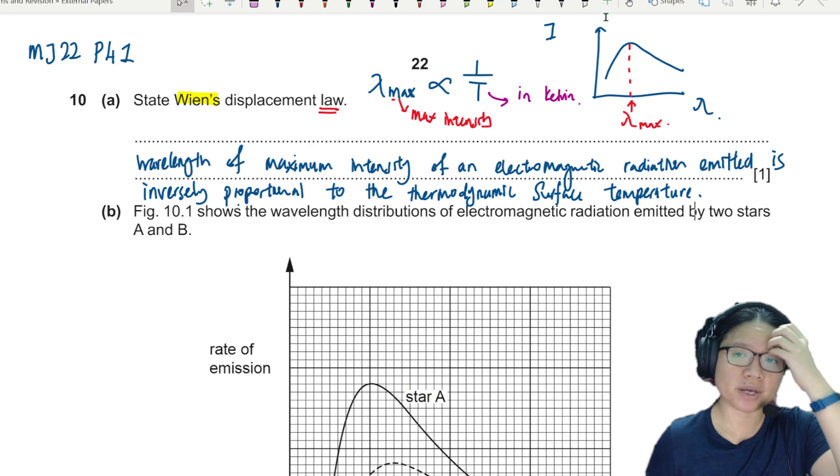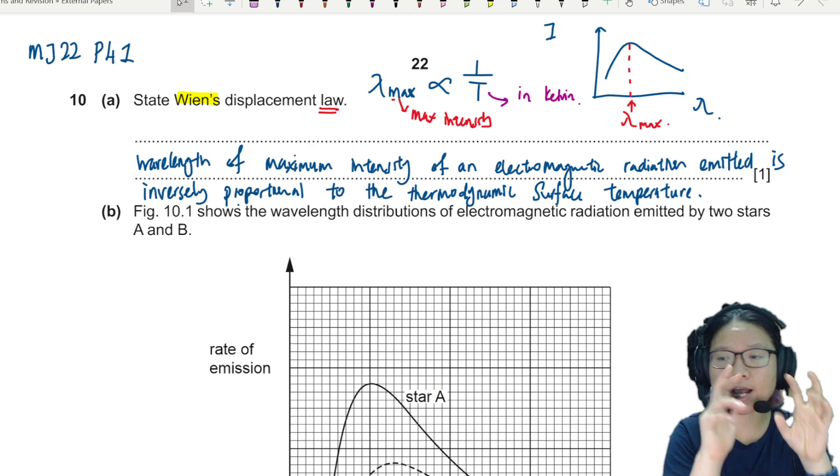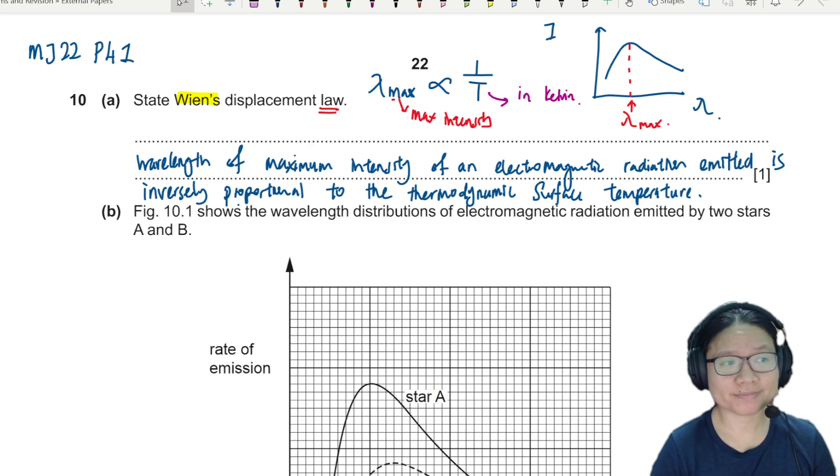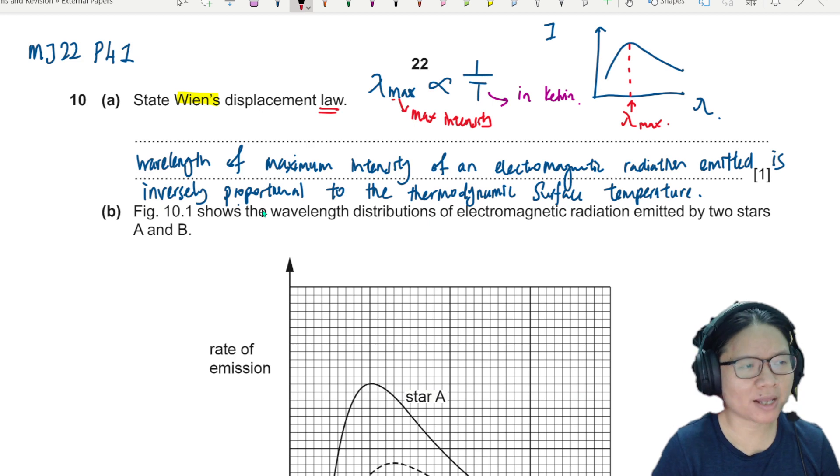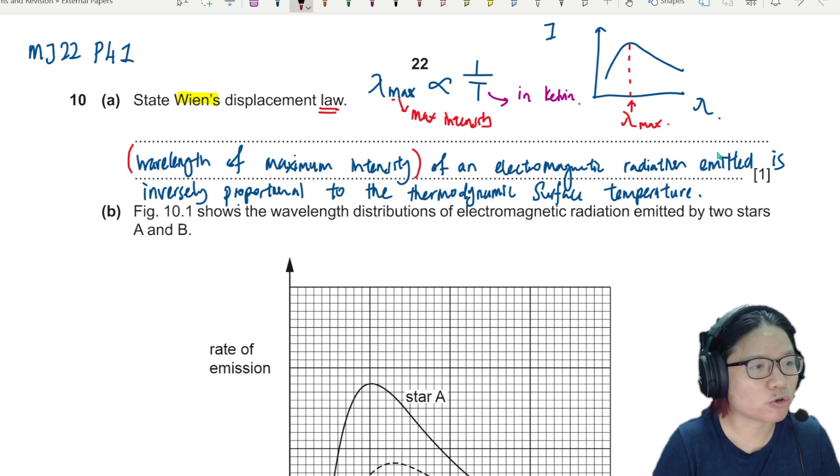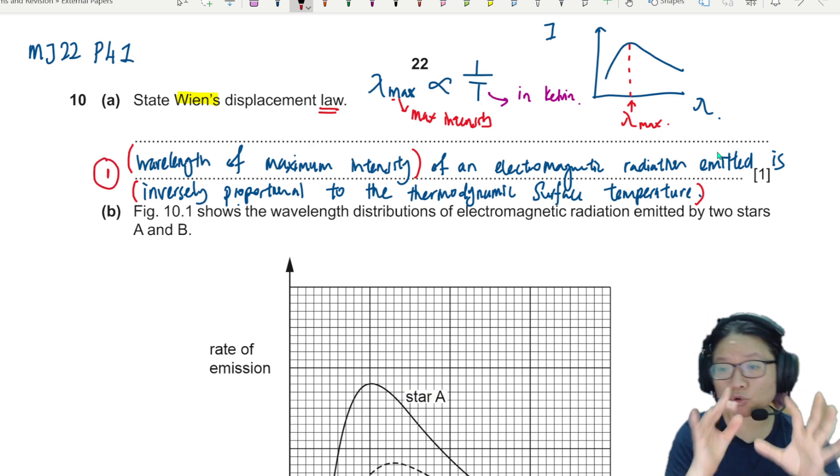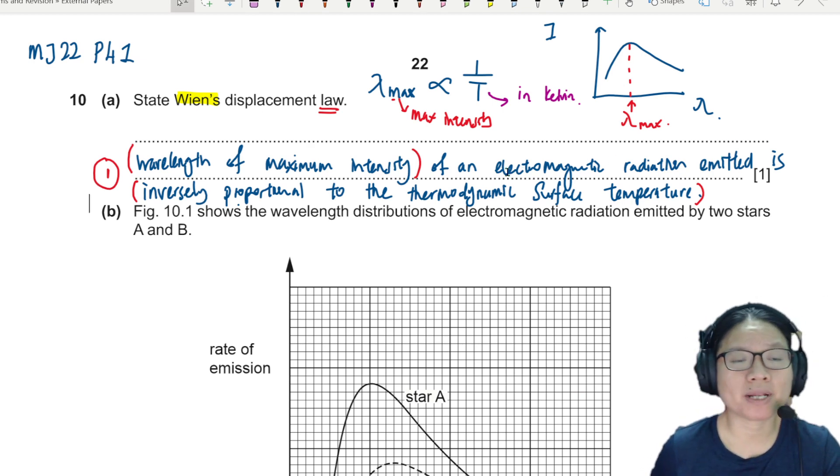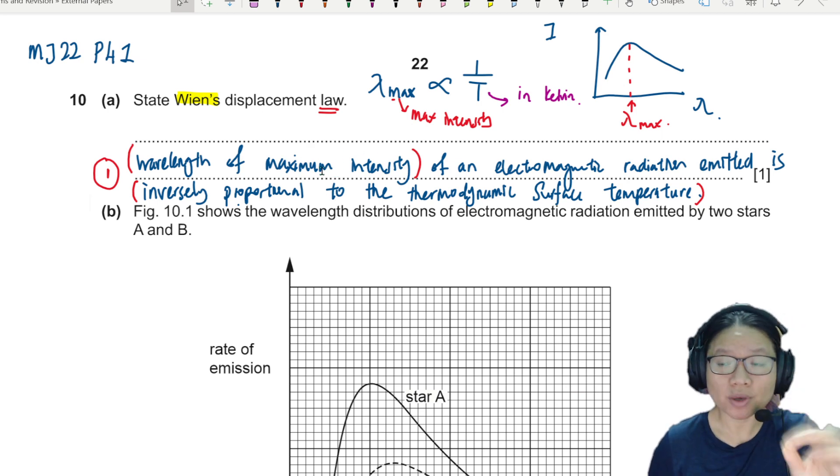So remember when you watch the lecture videos, we show you different colors depending on the temperature. So to get this one mark, you should at least mention that it is the wavelength of maximum intensity. And this is maximum intensity of the EM radiation emitted from the surface. And then you should also mention that it is inversely proportional to the thermodynamic temperature.